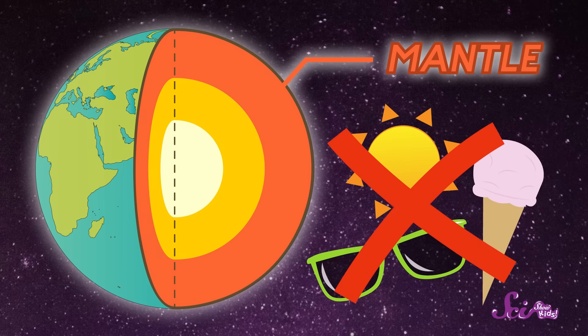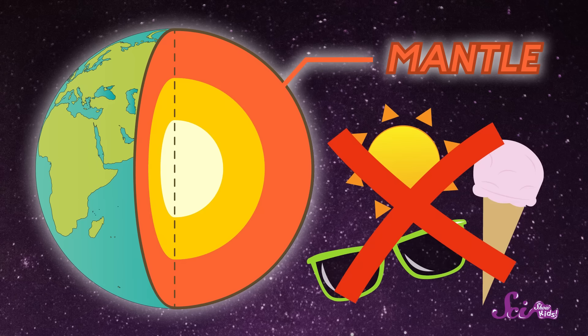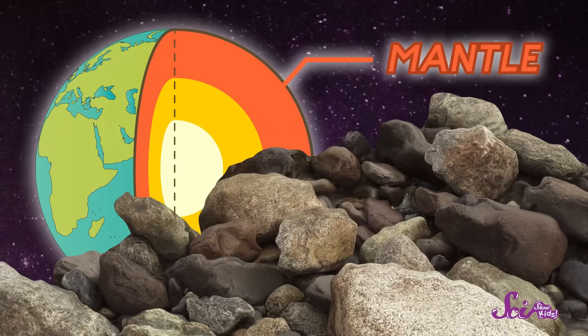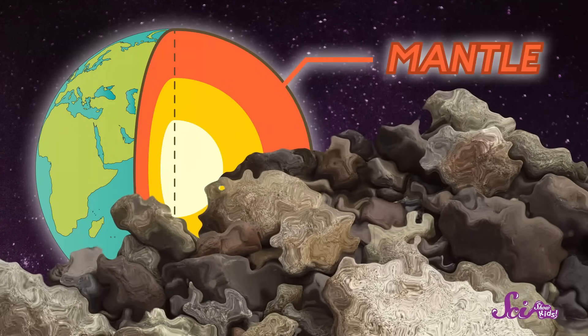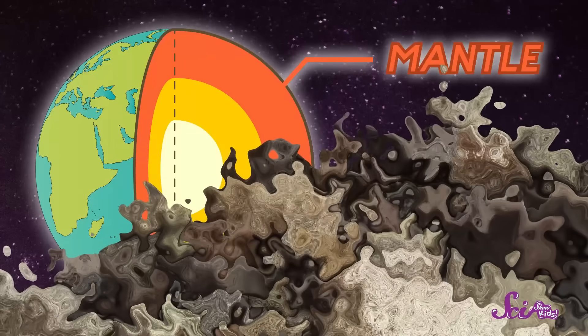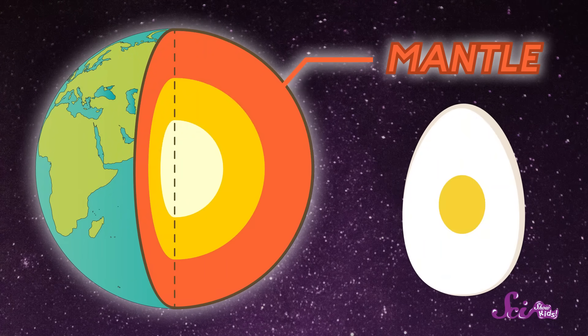And I don't mean a summer day at the beach kind of hot. I'm talking so hot that even though this layer is made of rocks and minerals, those rocks actually melt. And since the mantle is made up of melted rock, this layer can move around and flow like hot tar, bendy and slow. Sticking with our egg example, you can think of the mantle as being like the egg white.